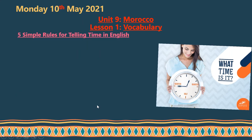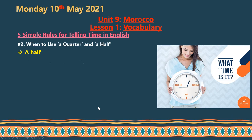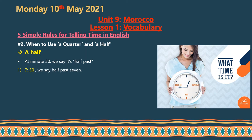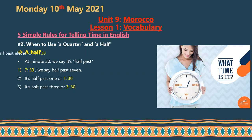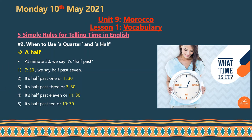Now we talk about 'half.' Half refers to 30 minutes — we say 'half past.' For example: 'half past seven' means 7:30. 'Half past one' means 1:30. 'Half past three' means 3:30. 'Half past eleven' means 11:30. 'Half past ten' means 10:30. And 'half past two' means 2:30.